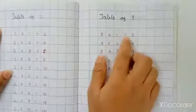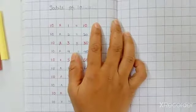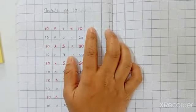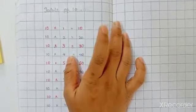Table of three, table of four, and table of five, and table of ten. So this way you have to learn tables from one to five and table of ten.